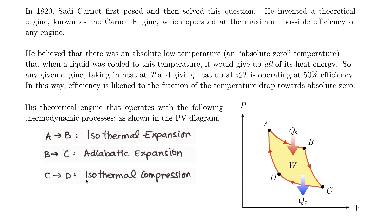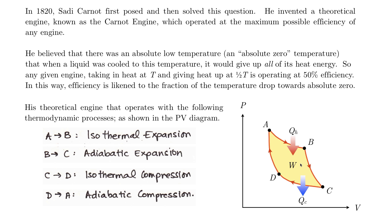C to D is an isothermal compression of the liquid, meaning all of these points have the same temperature, and heat flows out of the system at this point. The last section, D to A, is an adiabatic compression — the fluid compresses but no heat is lost during this time. Using this cycle, we maximize the amount of work done by the engine and therefore maximize its efficiency.